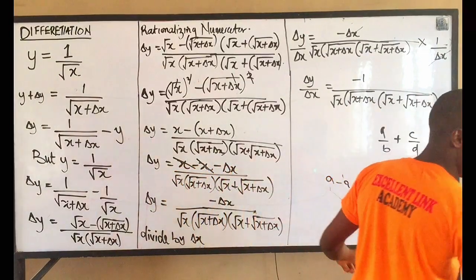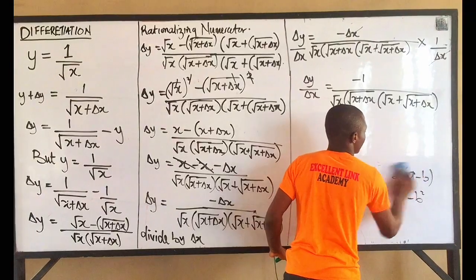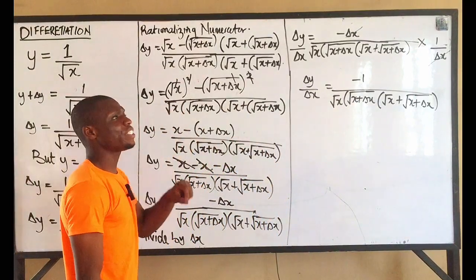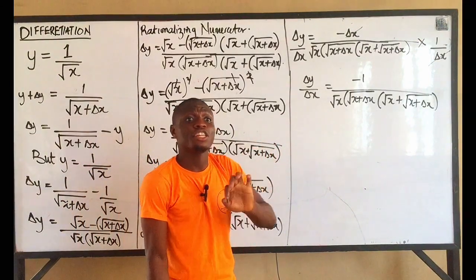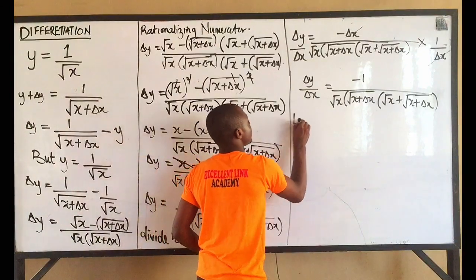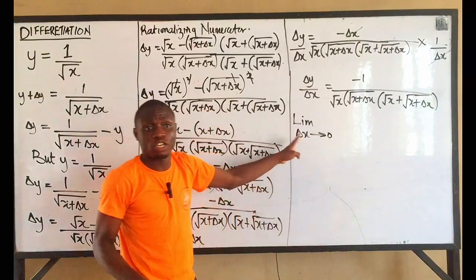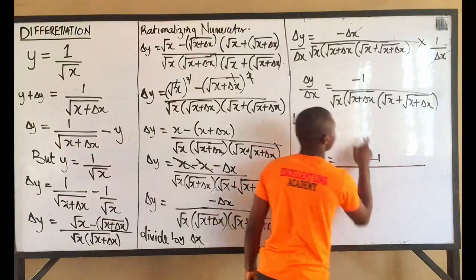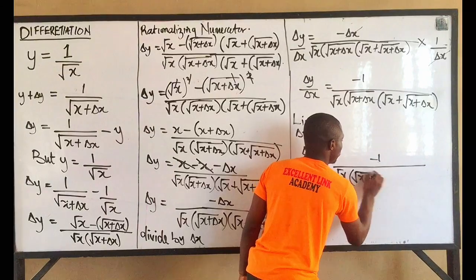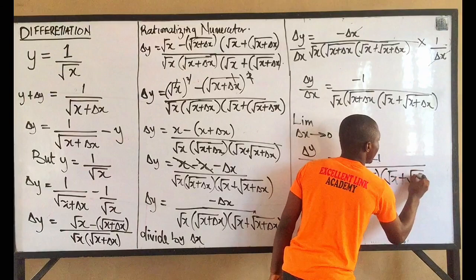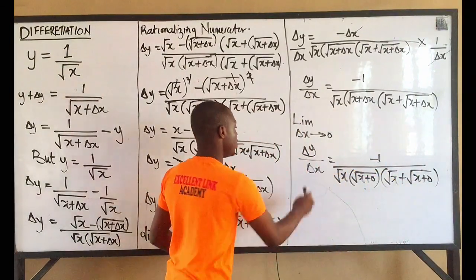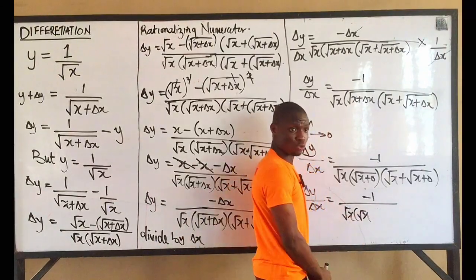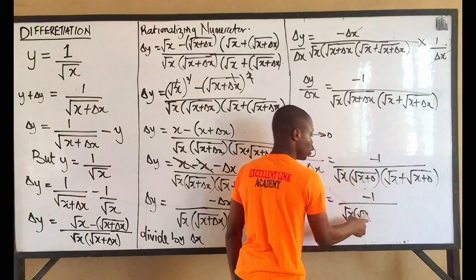From here, whenever you divide by change in x and are still left with change in x, you take the limit as Δx approaches zero. So taking the limit as Δx → 0: change in y over change in x equals minus 1 over root(x) · root(x + 0) · (root x + root(x + 0)).